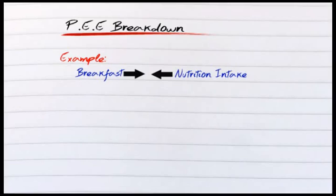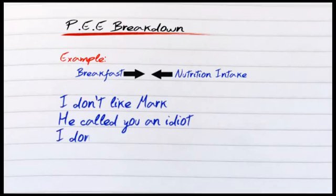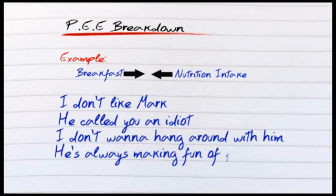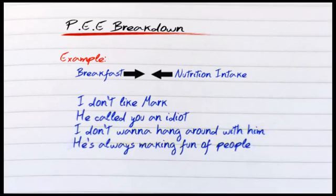If I take a very simple statement: I don't like Mark, he called you an idiot, I don't want to hang around with him, he always makes fun of people. We have a very simple PEE point. I've made a point by saying I don't like Mark, I've supported it by the fact that he called you an idiot — that's my quotation — and then I don't want to hang out with him anymore, he's always making fun of people. So I've explained my point and my evidence, why they're linked and why I'm taking a substantive course of action.